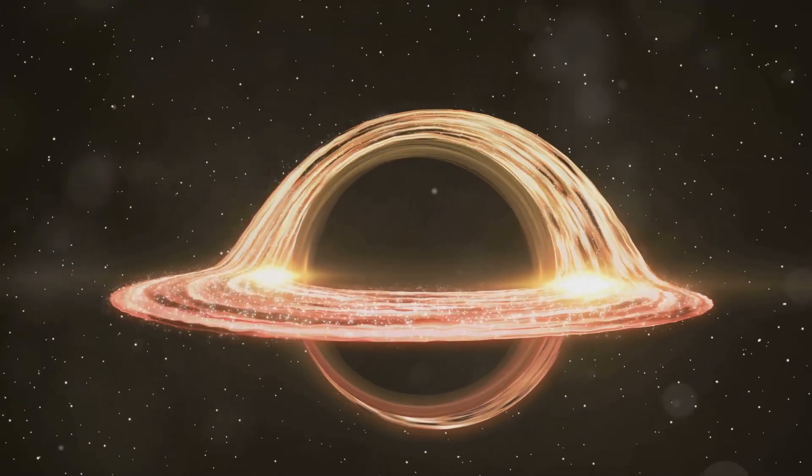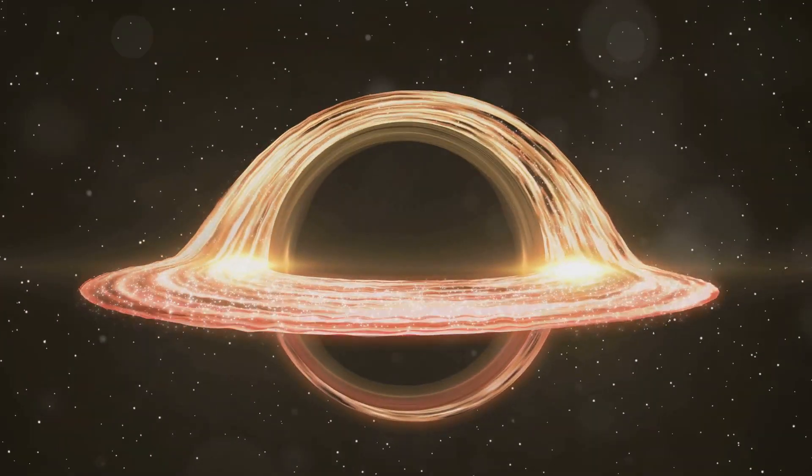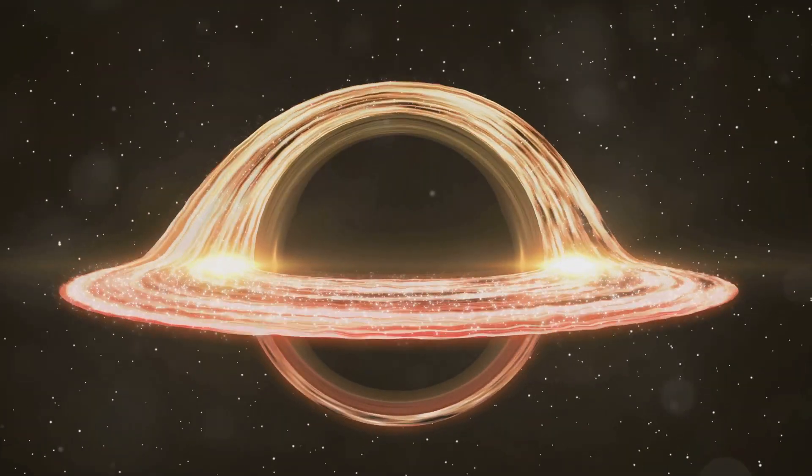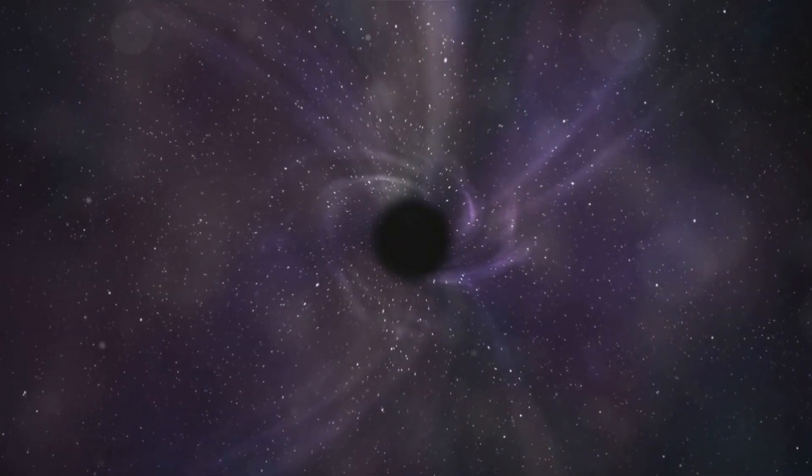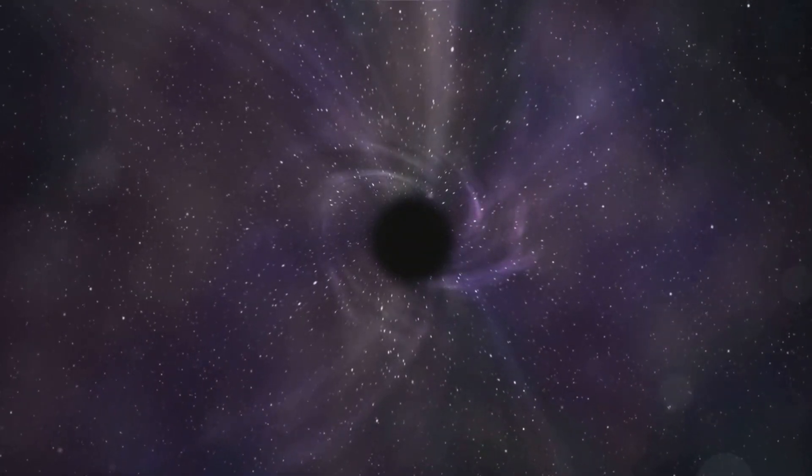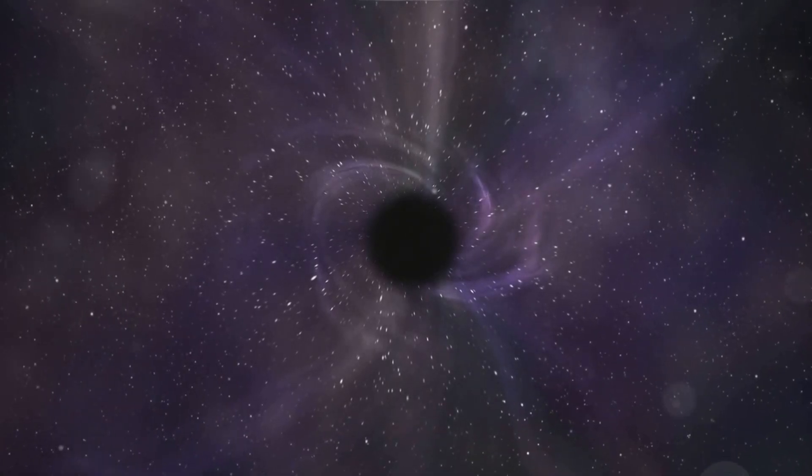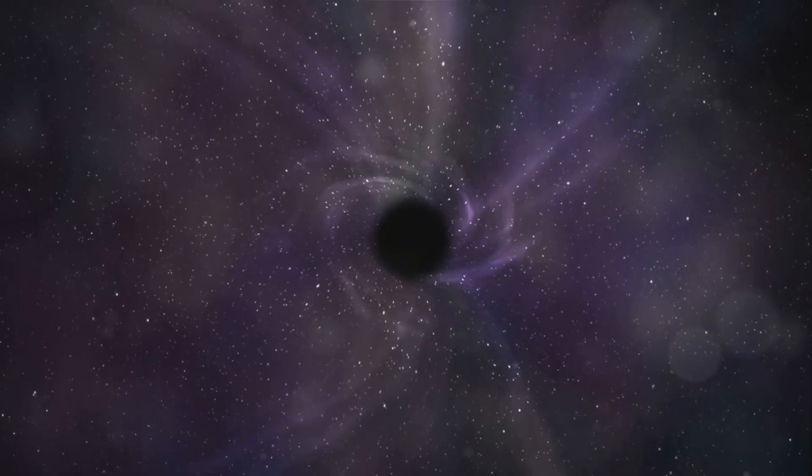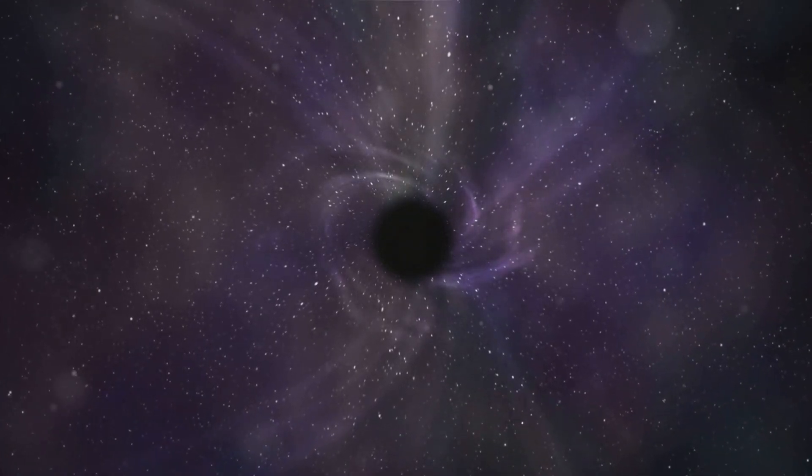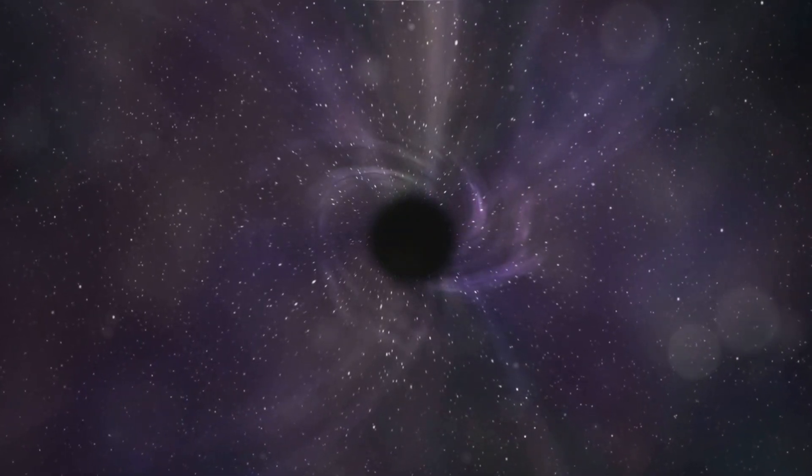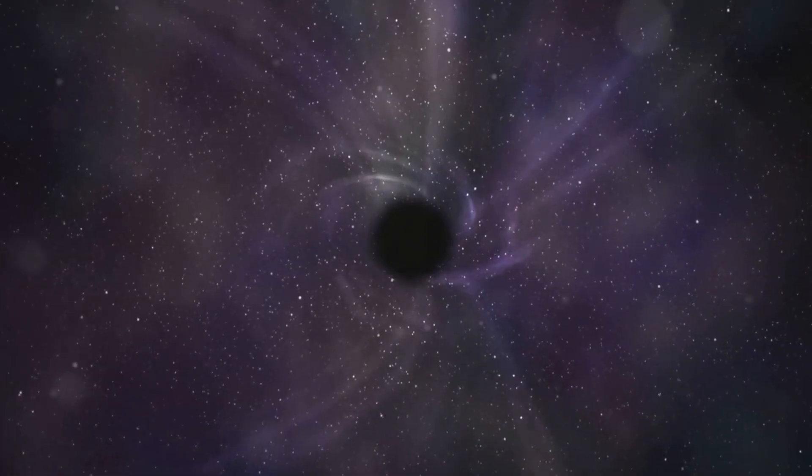Before we dive into the paradox itself, let's start with the basics: what is a black hole? In simple terms, a black hole is a region in space where gravity is so strong that nothing—not even light—can escape its pull. Black holes form when massive stars collapse under their own gravity at the end of their life cycles. When this happens, the core of the star compresses into an incredibly dense point called a singularity, surrounded by an event horizon, which is the point of no return.